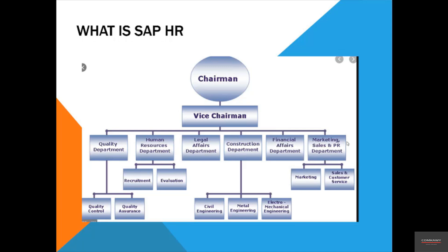Imagine a company where you have a chairman and a vice chairman, and under the vice chairman you have the quality department, human resource department, legal affairs, construction department, financial affairs, and marketing. This structure can represent anything — a government, a company, even your own house. Imagine the chairman is your mother and the vice chairman is your father, and you are responsible for quality by doing everyday chores.